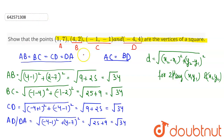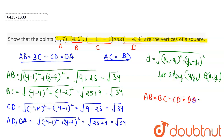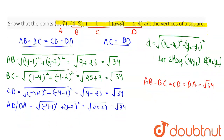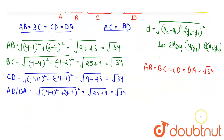So here you can observe that AB = BC = CD = DA = √34. Now let's check for the diagonals.